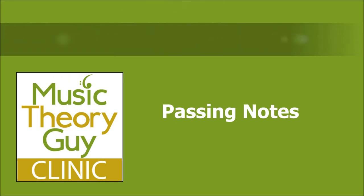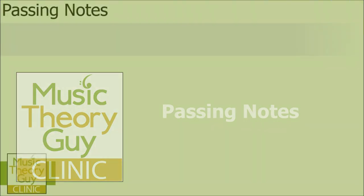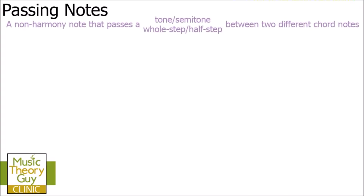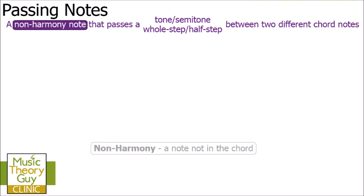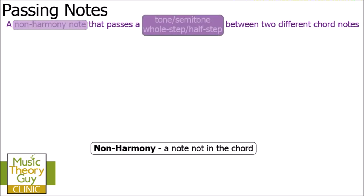In this music theory video we're going to be looking at passing notes. One way to define passing notes is a non-harmony note that passes a tone or semitone between two different chord notes. Let's break that down. A non-harmony note means a note that's not in the chord. Tones and semitones you may also know as whole steps and half steps — here in the UK I use tones and semitones, but they mean the same thing.